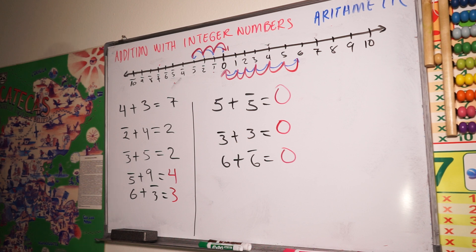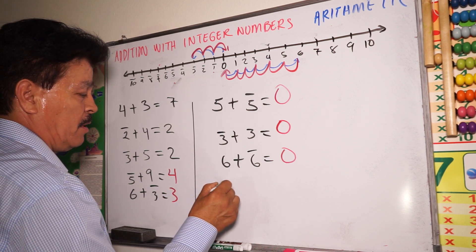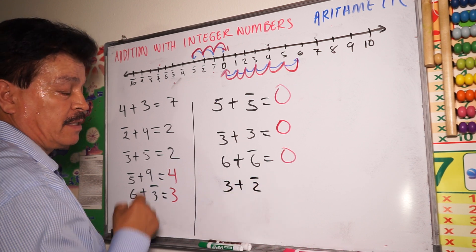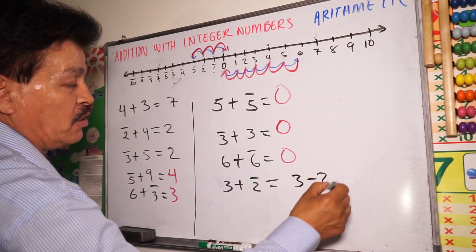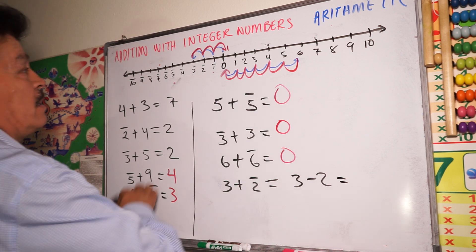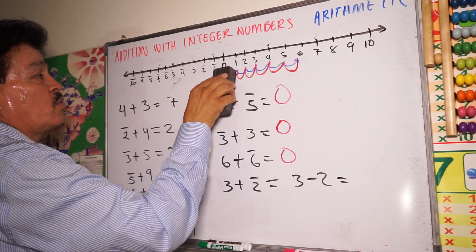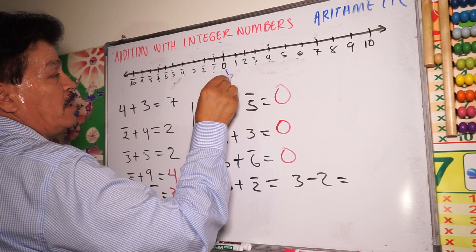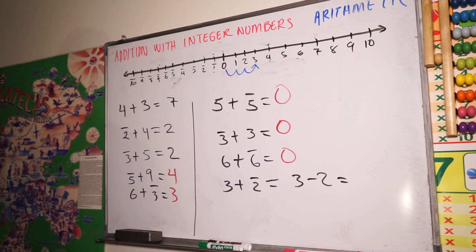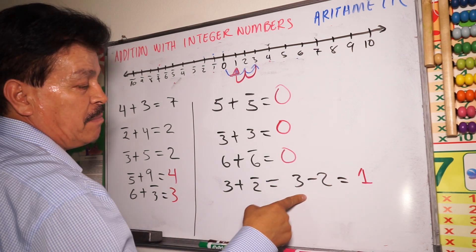Let's do a different problem. When you see something like three plus minus two, it's similar to writing three minus two. Use the number line to see how to get the answer. Move positive three — one, two, three — and then minus two — one, two — right here. The answer is one. Three minus two equals one.